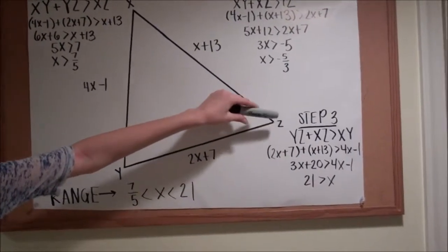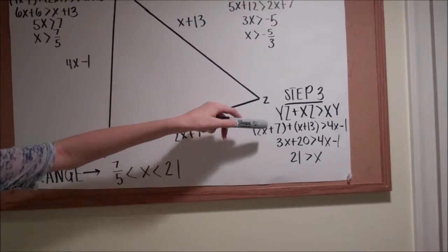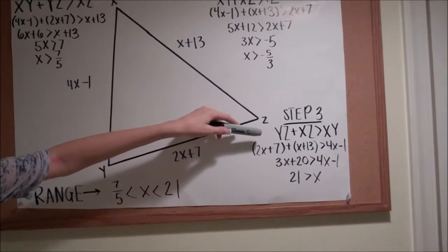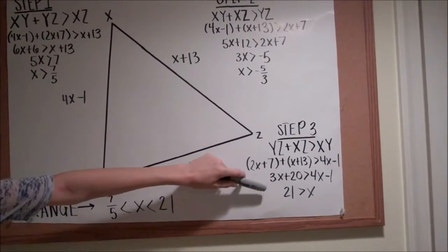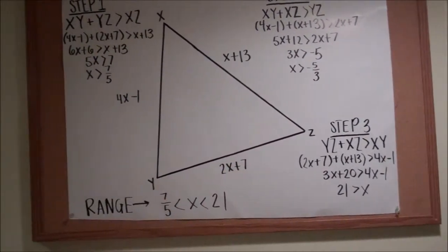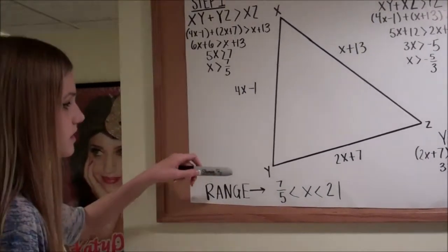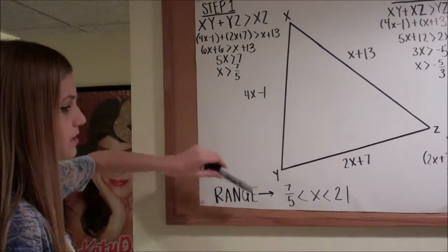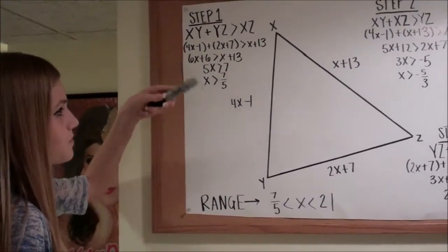For your third step, you have to do the same thing and take YZ plus XZ is greater than XY. Plug in your equations and you get 21 is greater than X. So your range would give you 7 fifths is less than X is less than 21. It's 7 fifths because it has to make the other one true.